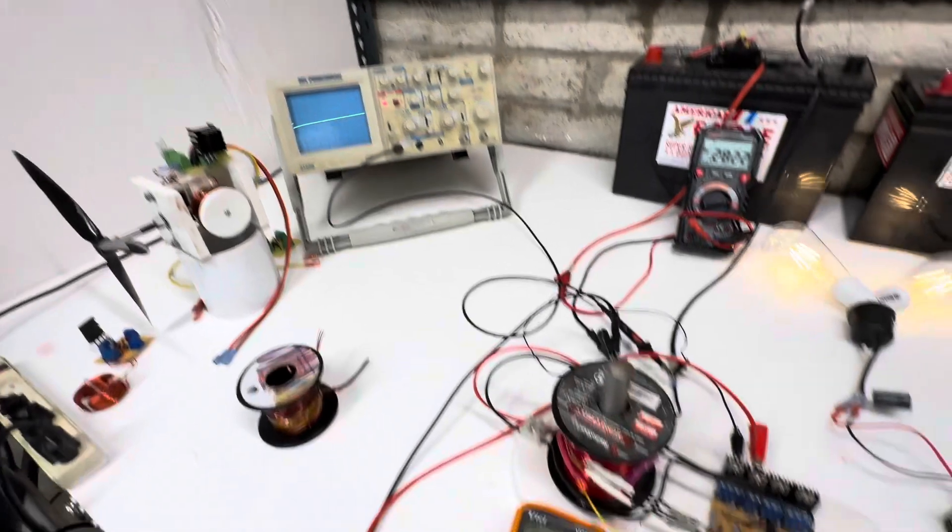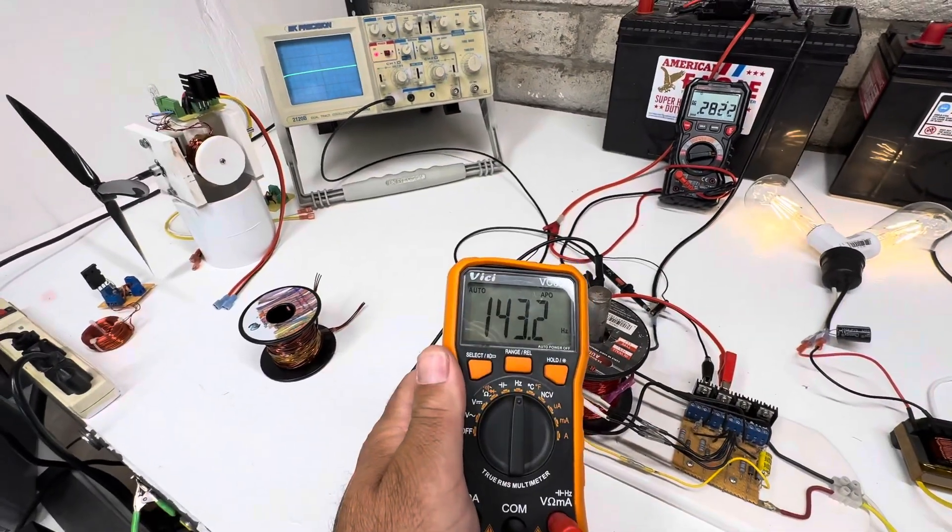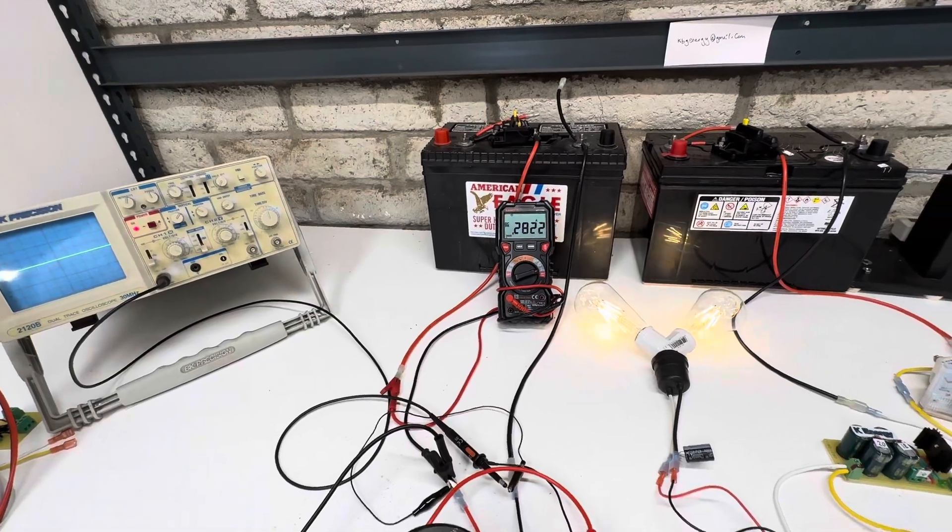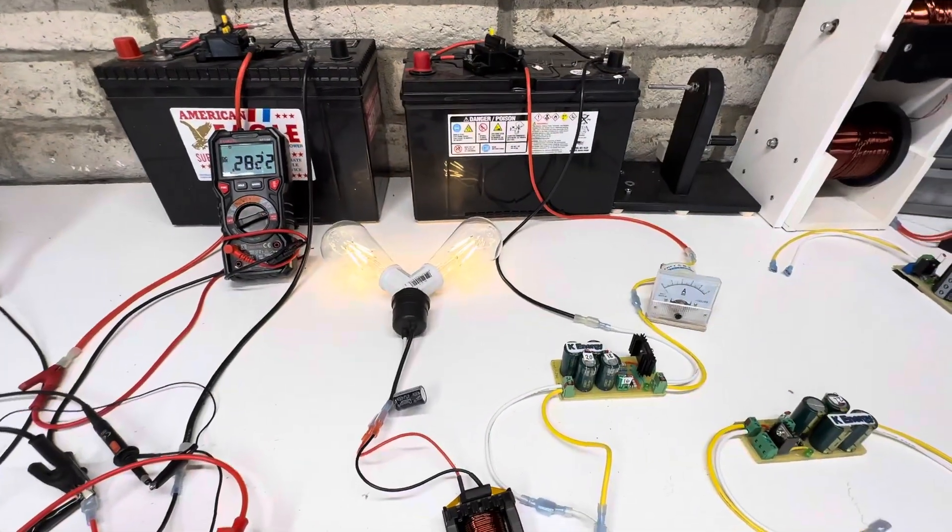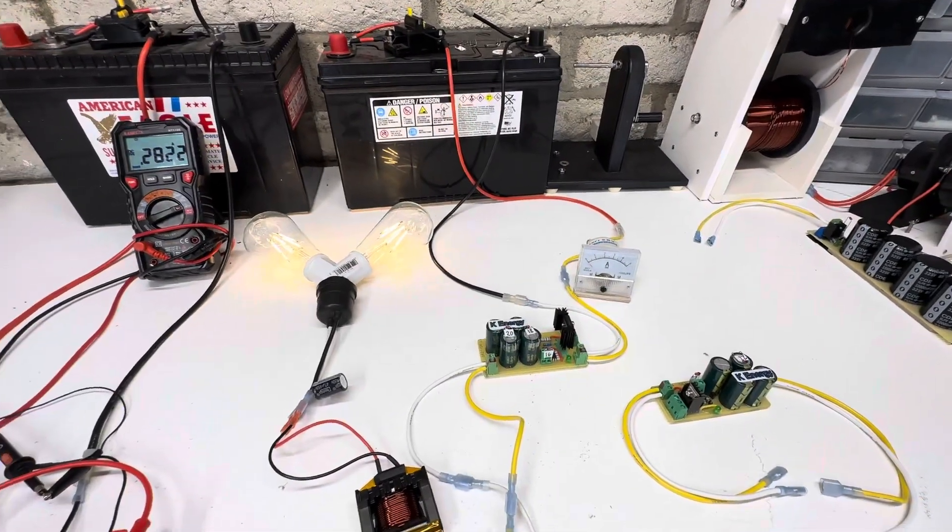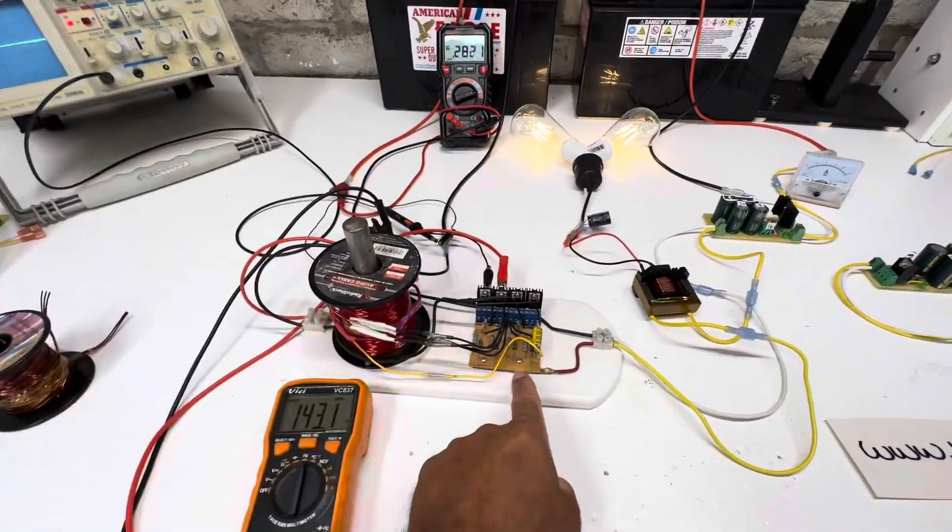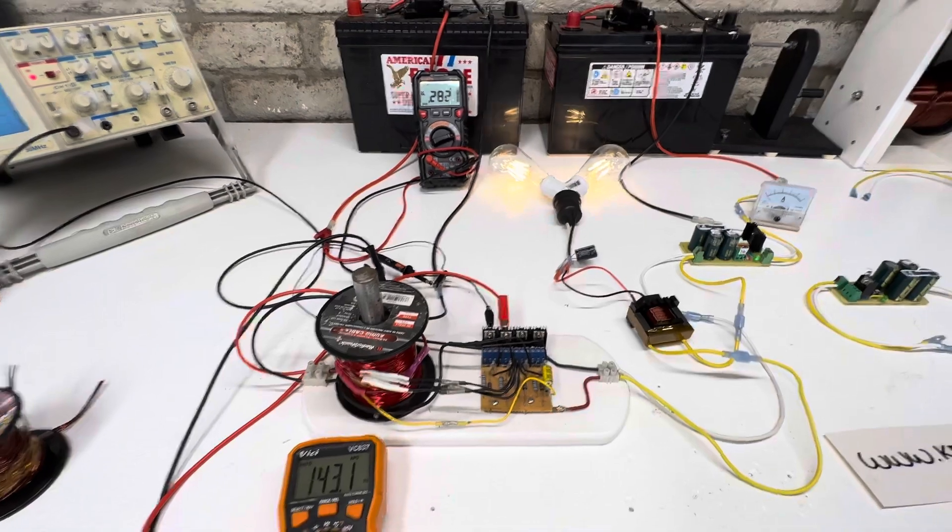So frequency went way down. So now we're down to 143 Hz and we're using 0.28 amps. The lights are dimmer, output slower. So basically if you're going to put the iron in, you have to tune the circuit back up for a little bit higher frequency.